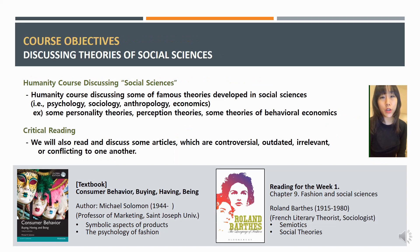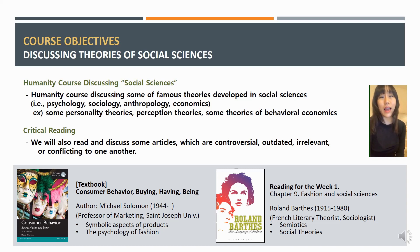For the first half of this semester we are going to talk about theories from social sciences. The textbook for this course is Consumer Behavior: Buying, Having, and Being, written by Michael Solomon, a professor of marketing. This book is a little old — written in 2006 — so some examples are outdated. I'm going to add more articles for you to read about more relevant and up-to-date issues, which could be controversial or conflicting with one another.